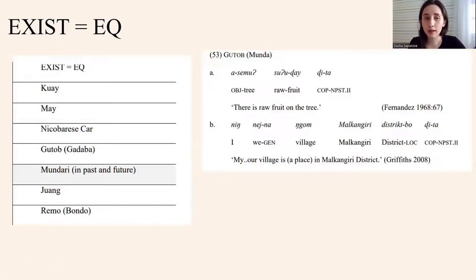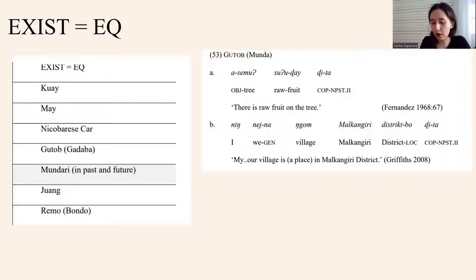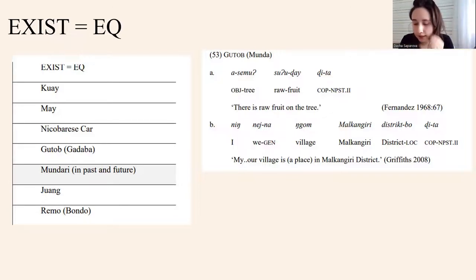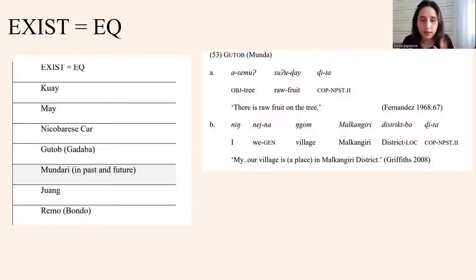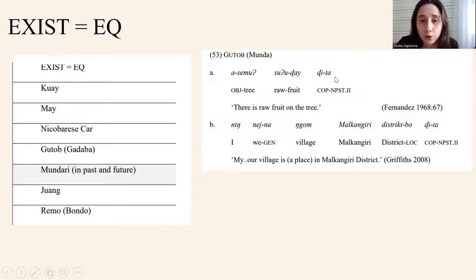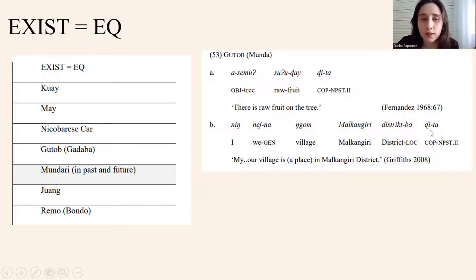There are also a number of languages which do not distinguish between existential and equative predication, and they use the same tools for marking them. Such languages include Kuai, Mai, and others. For example, in the slide we can see that the copula is used in existential predication — 'there is a raw fruit on the tree' — and the same copula is used in equative predication — 'our village is a place in Mnong district'. This copula 'tea' is used in both contexts.